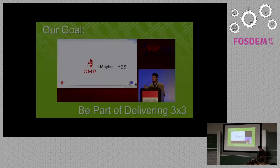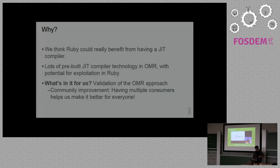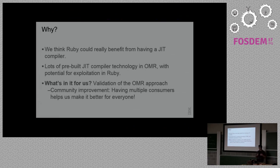So what's our goal with the Ruby plus OMR preview? Our goal is to make Matz change his slides — specifically the slide where he called out IBM J9 as a potential contributor to Ruby 3x3. We want to turn this from a maybe into a yes. Ruby 3x3 is really going to be about trying to take performance forward in big steps, and that's probably going to involve the JIT. We have a lot of pre-built JIT technology from OMR and we think OMR will be able to exploit that. What's in it for us is a validation of the OMR approach.